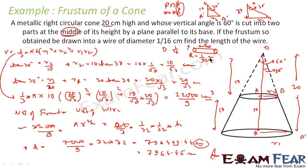The wire is always in the form of a cylinder, and the length of the wire corresponds to the height of that cylinder.